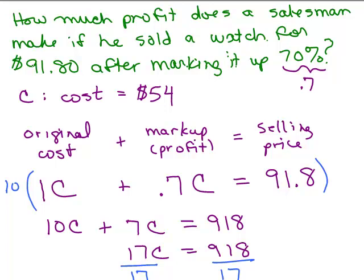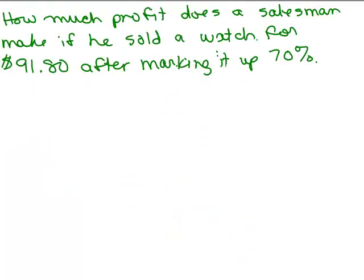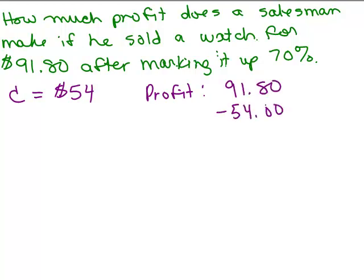Or actually, let's do that second. First, let's just figure out what it looks like his profit's going to be. So let's do 91.80 minus 54. So we're going to go down here, go to the next page. So remember we solved it and we got C was $54. So his profit would be 91.80 minus 54. So let's see, that's 7 and 37.